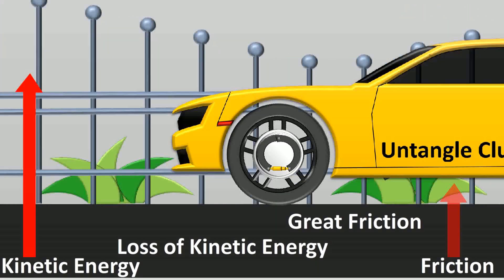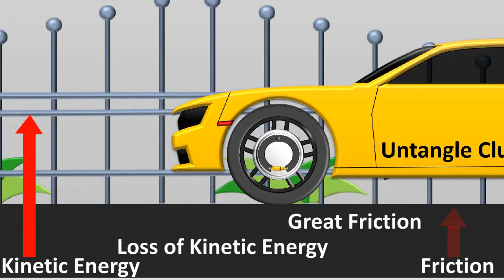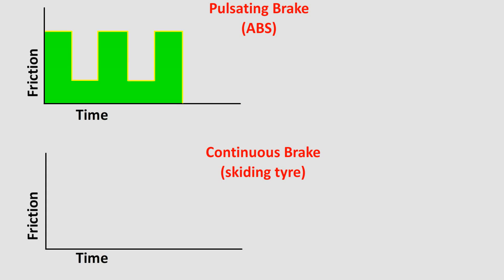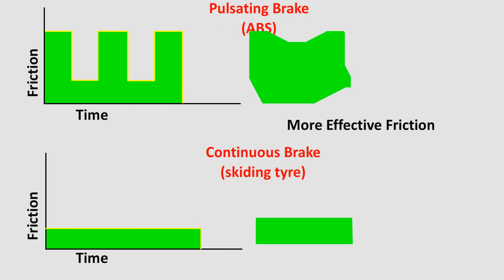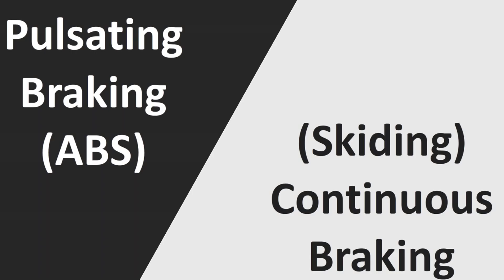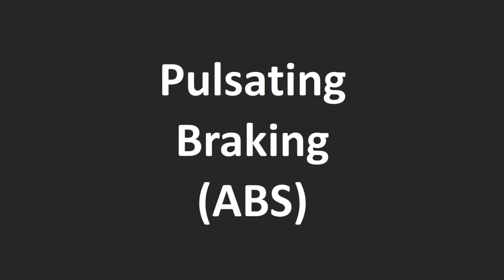When this is done multiple times in a pulsating manner, you lose a lot of kinetic energy. If you put this in a graphical representation, you can see that a high level of friction in the brakes — even in a pulsating manner — creates more net friction than the continuous but low-magnitude friction caused by skidding. As you get more effective friction in a shorter duration of time, you lose kinetic energy quicker, stopping your vehicle in a shorter distance. That's why pulsating braking in ABS is more effective than continuous braking with skidding tires.